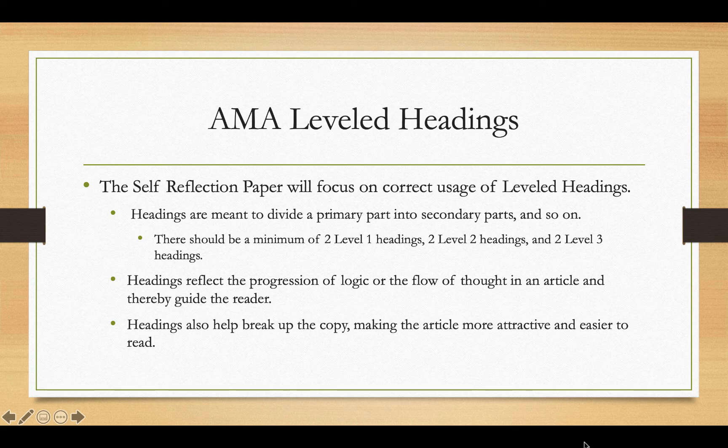Keep in mind that headings are meant to divide primary parts into secondary parts and so on. There should be a minimum of two level one headings. If you use a level one heading and decide to use level two headings, you must have at least two level two headings under any level one heading. Likewise, if you use level three headings, you must use at least two level three headings under any level two heading. Headings reflect the progression of logic and flow of thought, guiding the reader. This is an important skill you will need for your scholarly project in the PA 960 series.